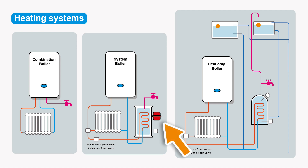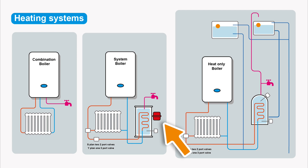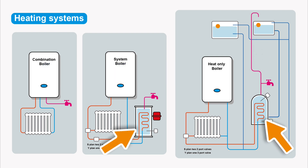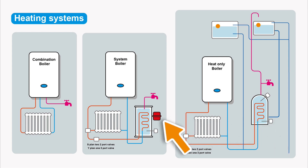The system boiler has a sealed or unvented system; the heat-only uses a vented system. System boilers are at mains pressure, whereas heat-only boilers are fed from feeding and expansion tanks up in the loft. Because there's a store of water, as that water heats it expands, so systems are in place to deal with that. System boilers have a more complex setup with safety devices and an expansion vessel to protect against pressure buildup, which could potentially be dangerous.